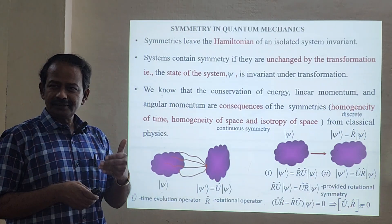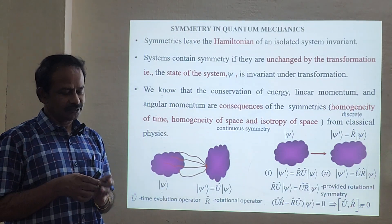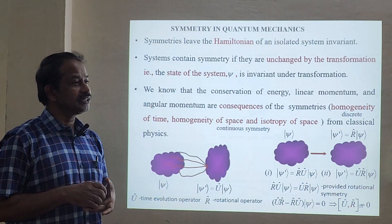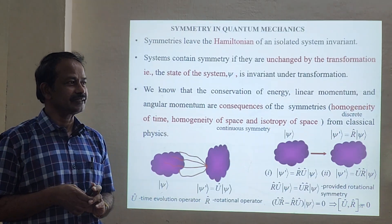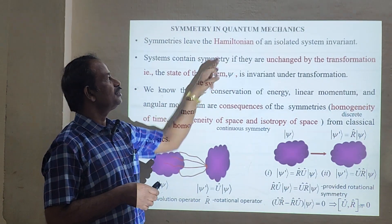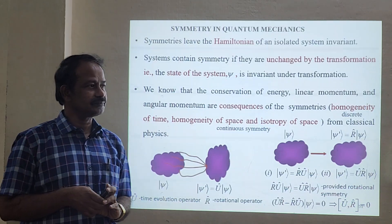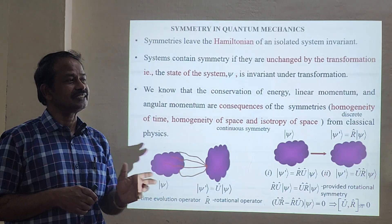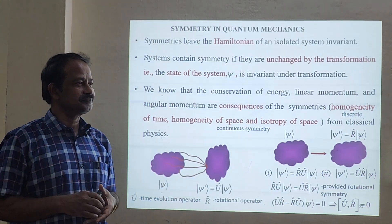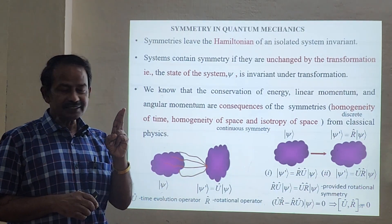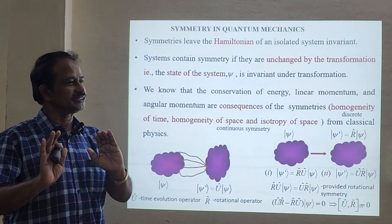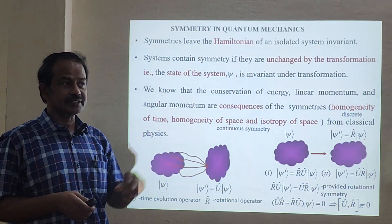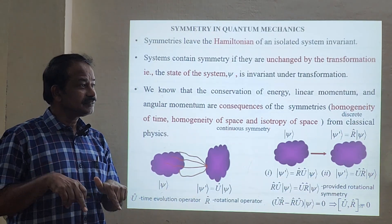When we talk about symmetry, we think about two major important entities. One is the Hamiltonian, and another one is the state vector — the wave function. The Hamiltonian and the state of the system will never change; they will be invariant under symmetries. Invariant means it will never change. Similarly, the state vector will never change under symmetry.